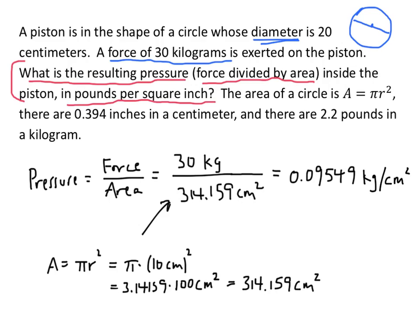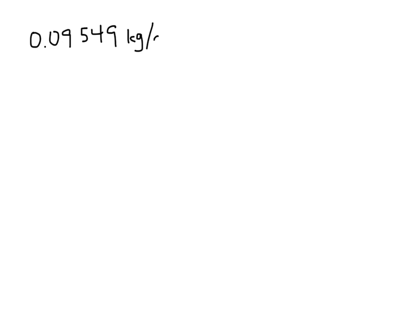Take a second to make sure you understand what we've done up to this point before we begin converting the units. Our answer so far is 0.09549 kilograms per square centimeter, and now we need to convert that to pounds per square inch.